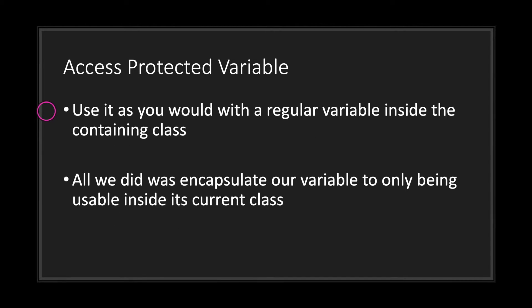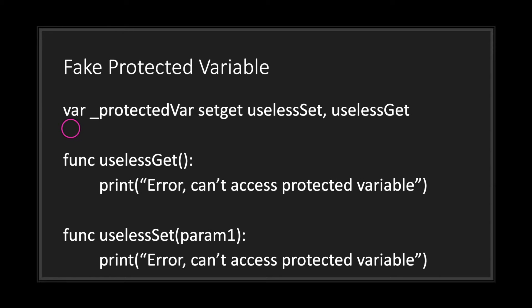To access a protected variable from within your class, simply access it like a normal variable. One thing to note: if you use the self keyword you will go through your setter and getter methods, so do not use the self keyword. By doing this we've basically encapsulated our variable to only being usable inside the current class. To create a fake protected variable, use the var keyword followed by the underscore symbol and the variable name, then use the set/get keyword followed by the setter and getter function names, making sure you actually declare those functions in the class.